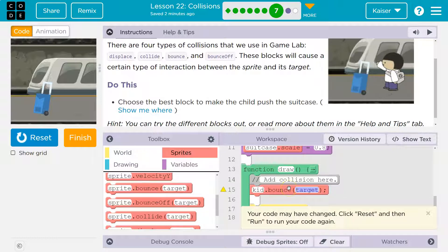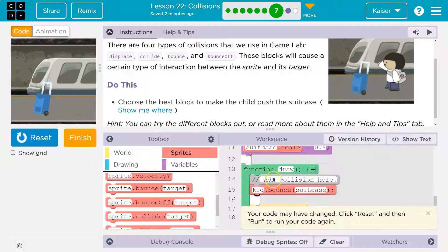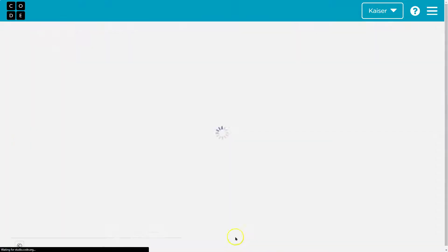So I'm gonna say when the kid and the target would be the suitcase, right? We don't have sprites and targets. We have a variable named kid and a variable named suitcase. Let's see what happens.